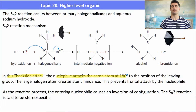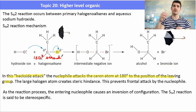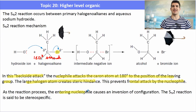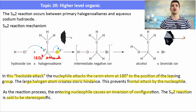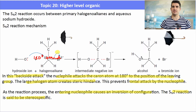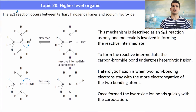In an SN2 mechanism there is stereochemistry involved: backside attack by the nucleophile, meaning it attacks the carbon at 180 degrees from the halogen. The halogen is a fairly large atom, so the nucleophile can't attack from the same direction — this is called steric hindrance. The nucleophile comes in from the other side, which inverts that carbon, so the hydroxide ends up on the other side. You can think of it like inverting an umbrella. There is stereochemistry involved in an SN2 reaction.